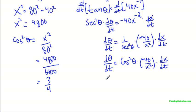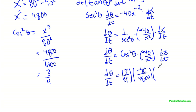So now I just fill everything in. dθ/dt equals 3/4 times negative 40 over 4,800, and dx/dt is 3. So I'll just go ahead and do the math on this, and then we'll have our answer.